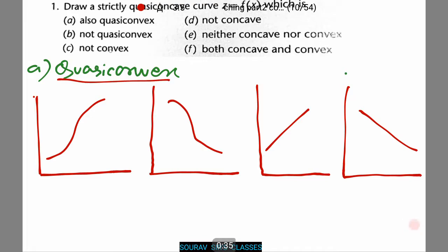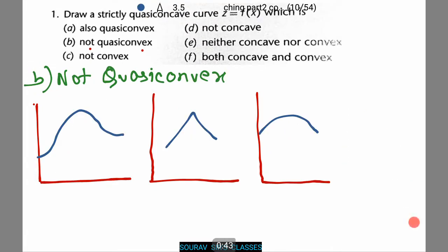Let's see for the next case of not quasi-convex. These are the examples of not quasi-convex. Mind you, any other figure other than these three are not acceptable.